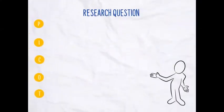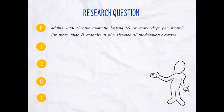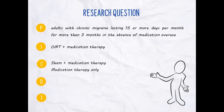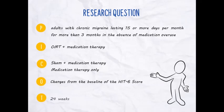Let's start looking shortly at the research question. The population was adults with chronic migraine lasting 15 or more days per month, for more than three months in the absence of medication overuse. The intervention was osteopathic manipulative treatment, abbreviated OMT, plus medication therapy. For the control, we have two controls: sham plus medication therapy, and medication therapy only. The primary outcome was the changes from baseline of the HIT-6 score — HIT-6 stands for Headache Impact Test — over 24 weeks.